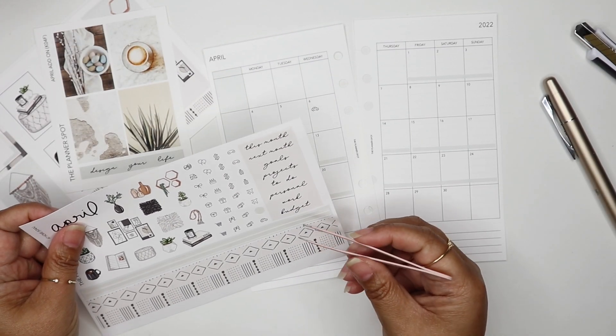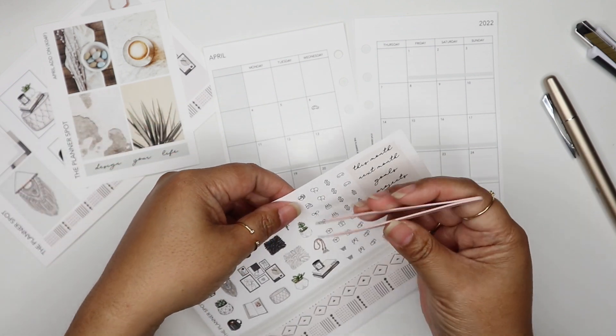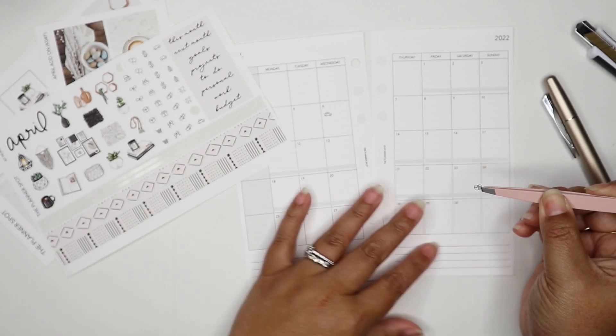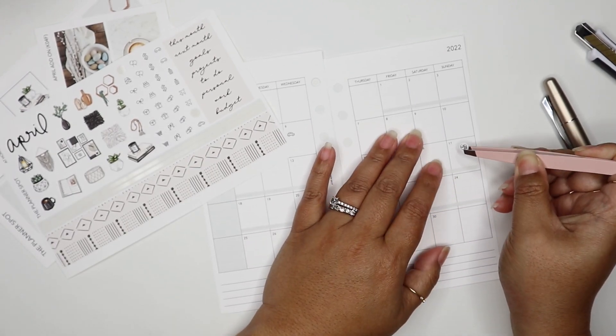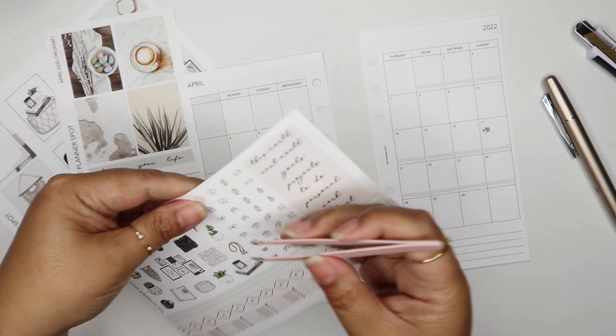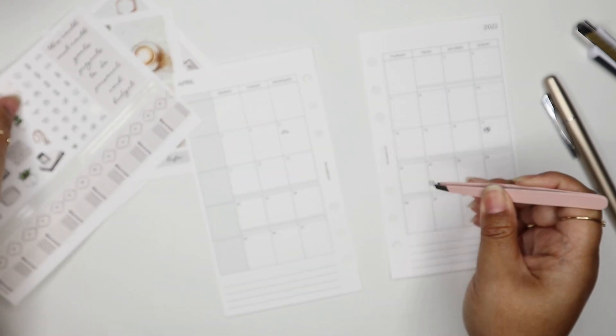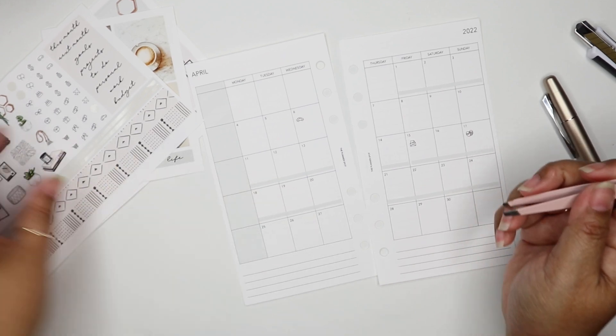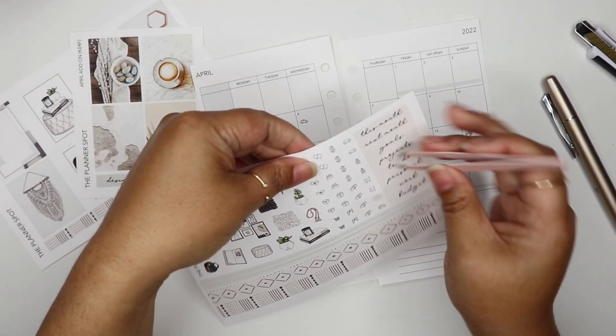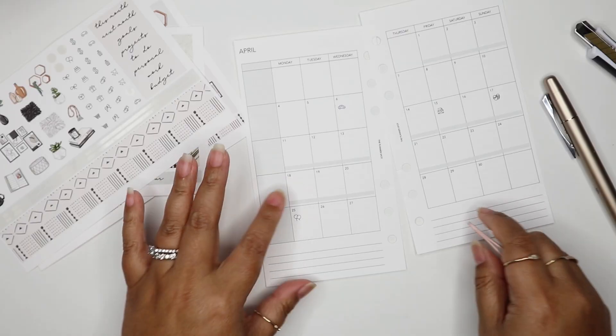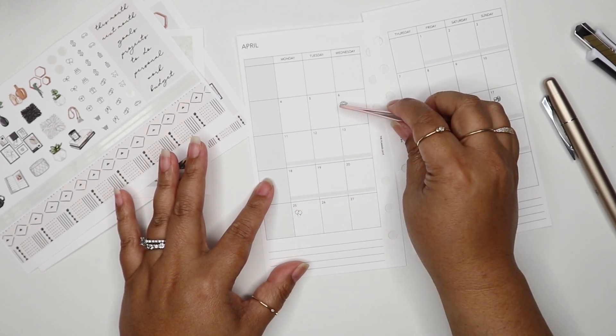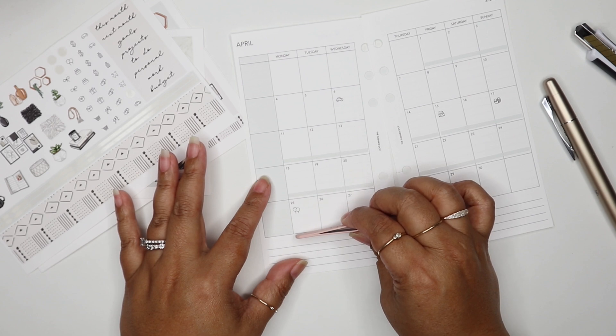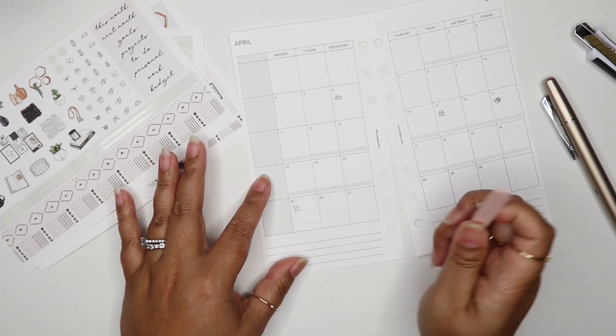Here we have Easter, so I have this little icon on my sticker kit which falls on the 17th. Tax day on the 15th and my mom's birthday on the 25th. I try to keep it more towards the top because on some of these days there's things to go down below to make sure I have enough space.